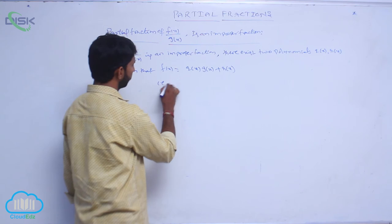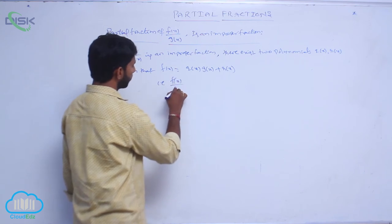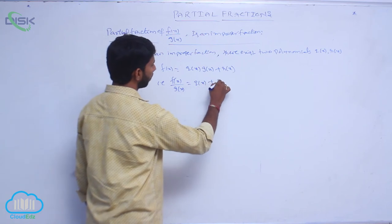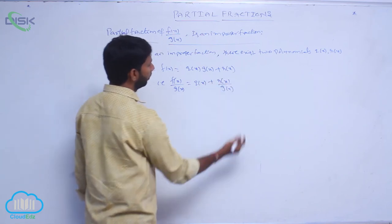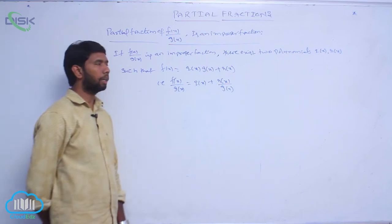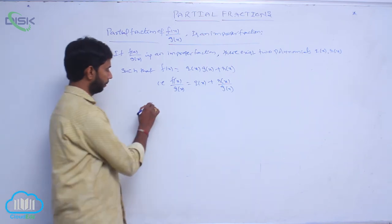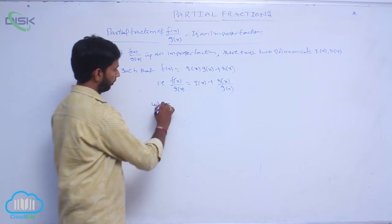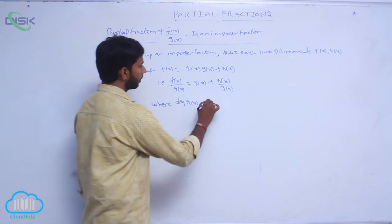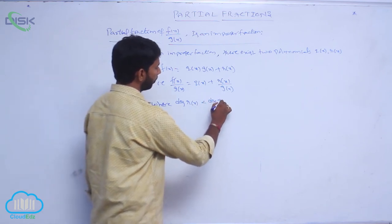That is, f(x)/g(x) is equal to q(x) plus r(x)/g(x), where degree of r(x) is less than degree of g(x).